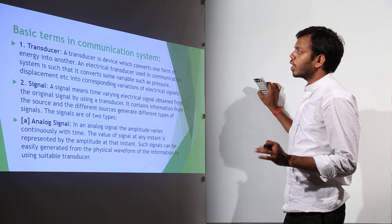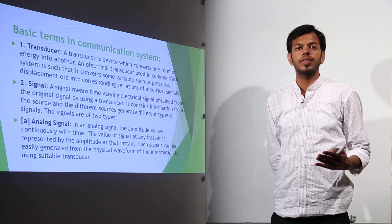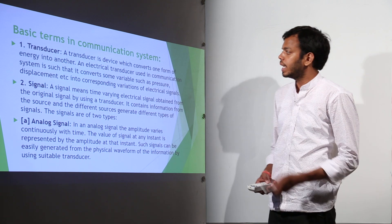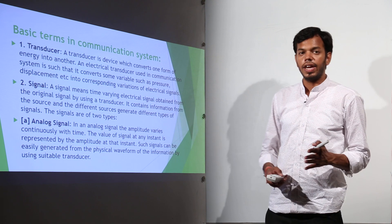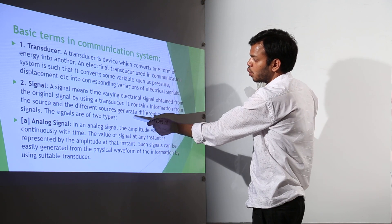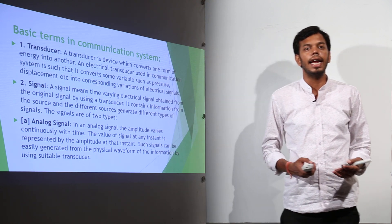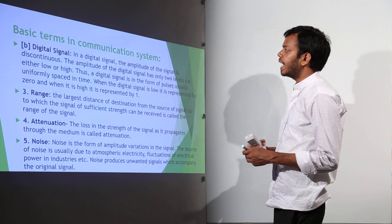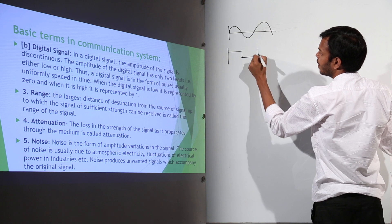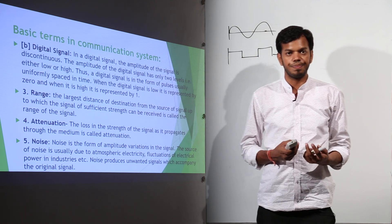Now we need to know the basic terms used in a communication system. A transducer is a device which converts one form of signal into another — for example, a microphone converts a sound signal into electrical format. A signal is a time-varying electrical signal; it is the actual thing to be sent, containing information from the source. Different sources generate different types of signals. Signals are of two types: analog signal, which follows an analog waveform, and digital signal, which follows a digital waveform of 0s and 1s.